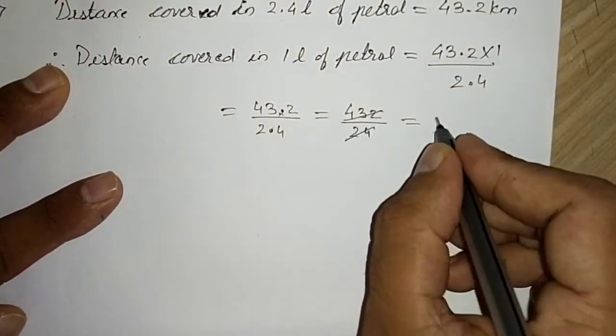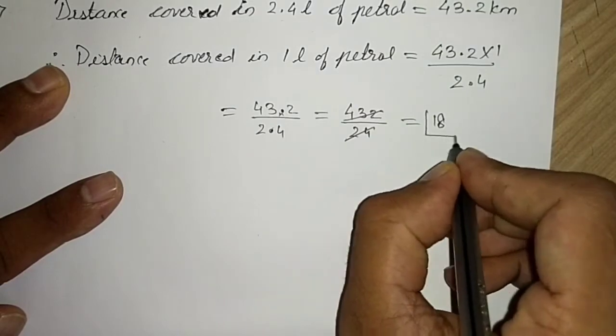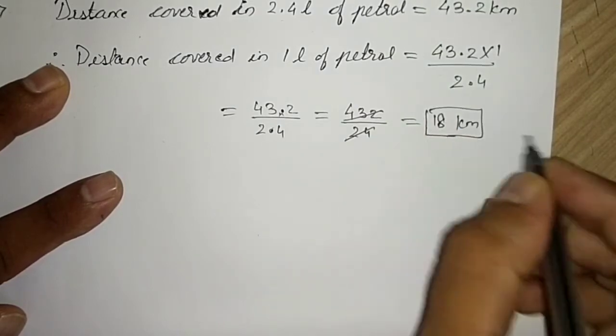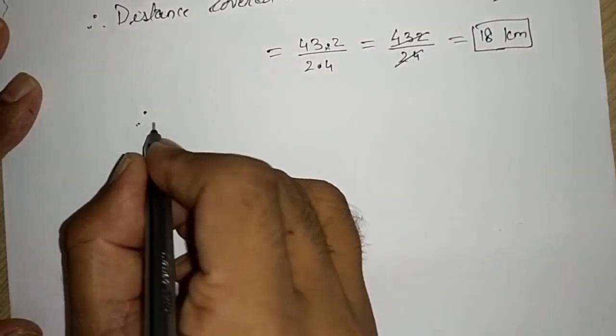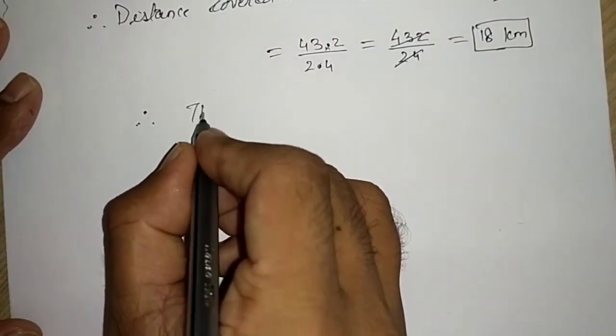We will write like this: 24 ones are 24, 18, 18 kilometers.